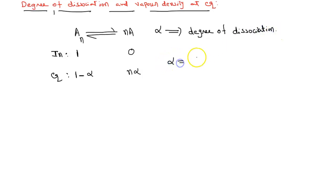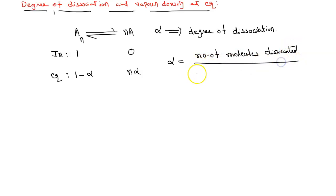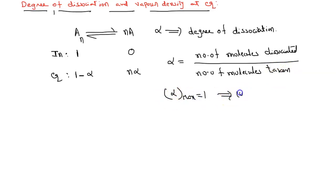Degree of dissociation alpha is equal to number of molecules dissociated divided by number of molecules taken. The maximum alpha value will be 1, which is equal to 100%. Based on that, 1 minus alpha is the number of moles of A_n present at equilibrium, and n·alpha is the number of moles of A present at equilibrium.